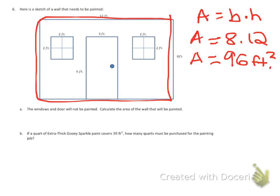So that's the area of our big rectangle. Then we have all these little shapes. We have windows and we have the door.